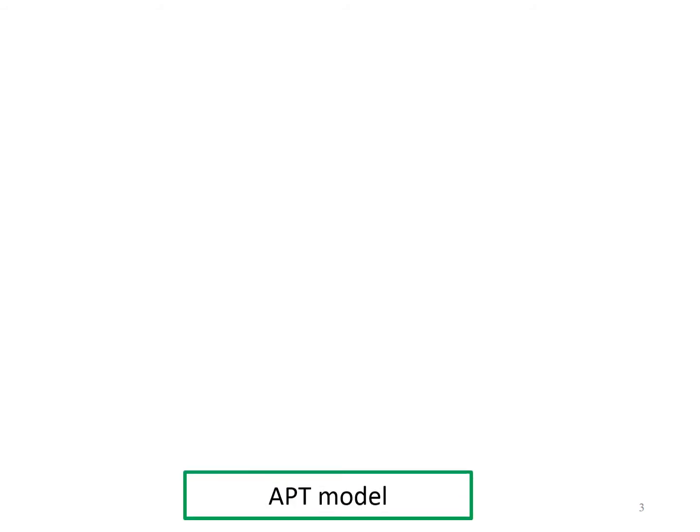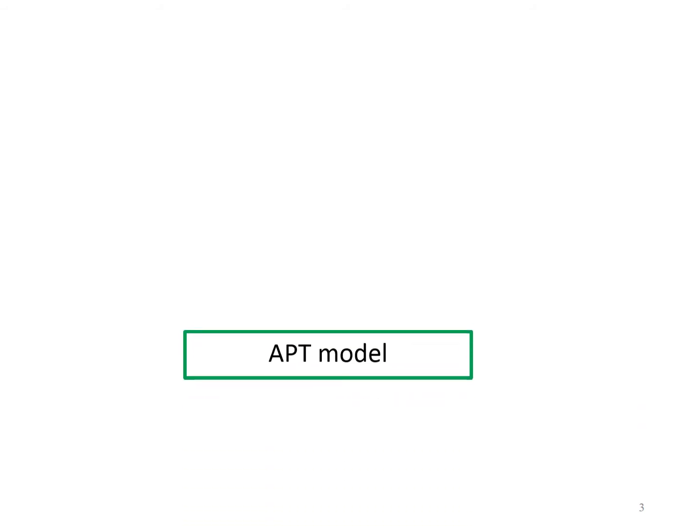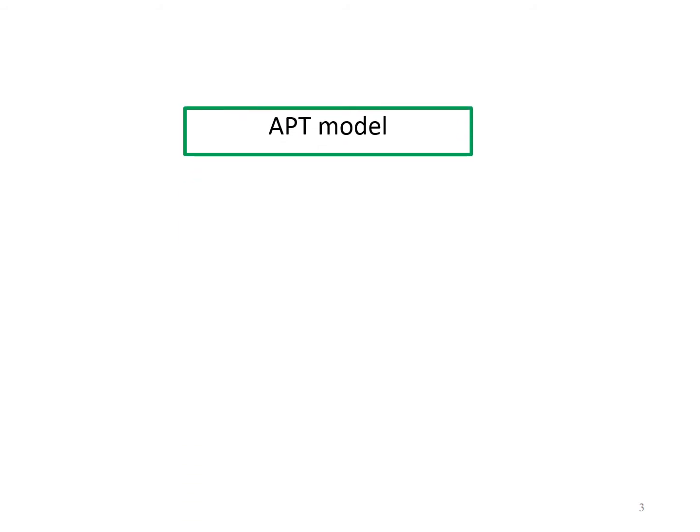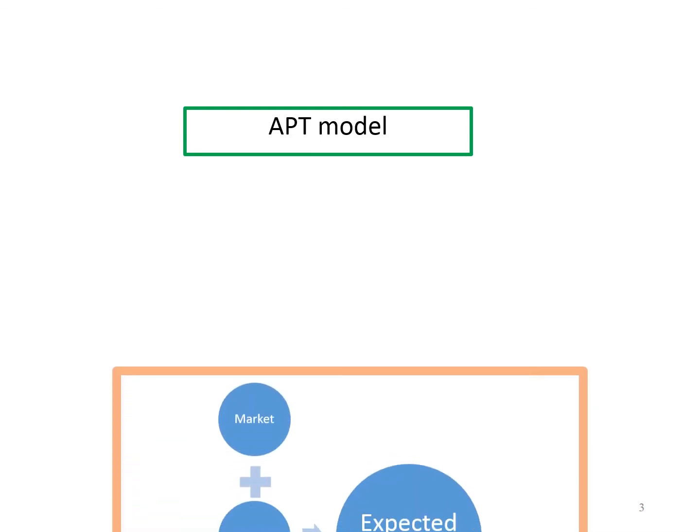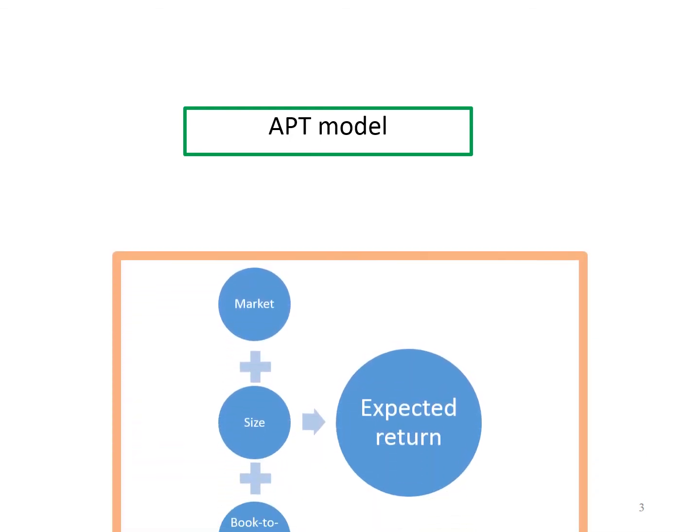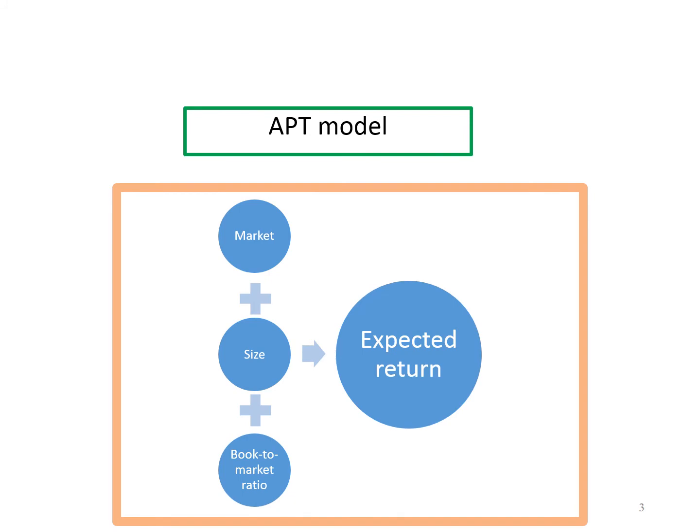The Fama and French Three-Factor Model is extended from the Arbitrage Pricing Theory. In general, Fama and French identify three factors that appear to determine expected returns: the market factor, the size factor, and the book-to-market ratio.